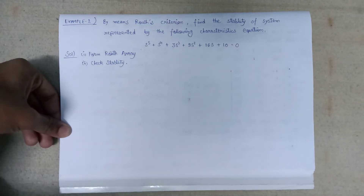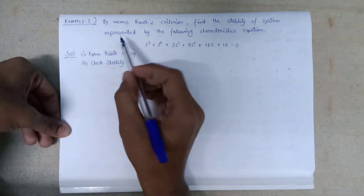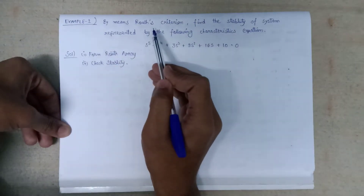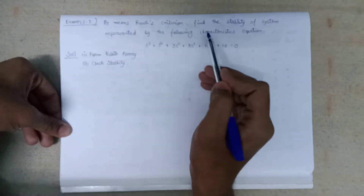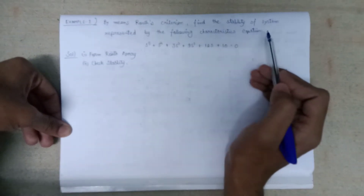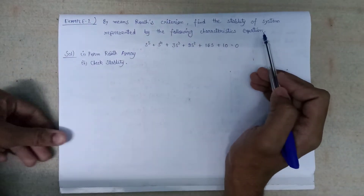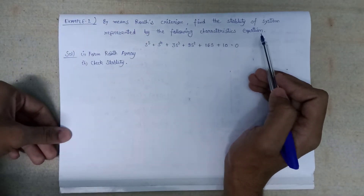Welcome all. In this lecture, we are going to discuss Example 2. By means of Routh criteria, find the stability of the system represented by the following characteristic equation.